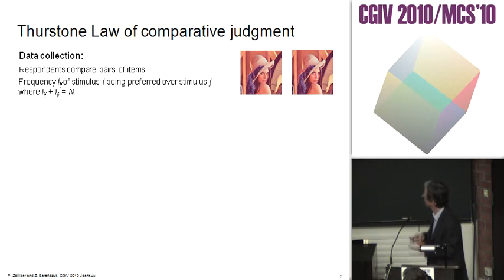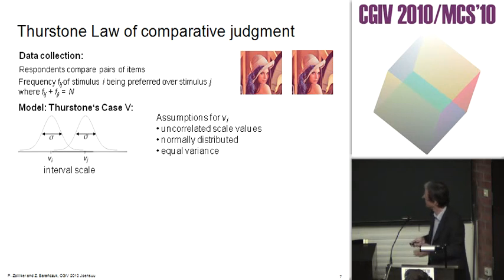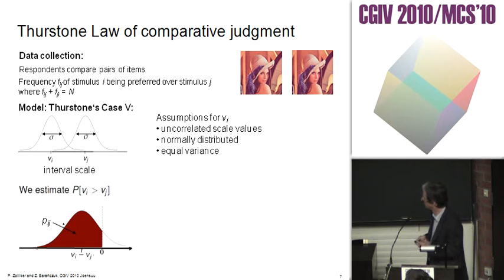The sum of F_ij and F_ji is usually N. Here we are very strict to Thurston case five. The assumptions are that we have uncorrelated scale values that are normally distributed with equal variance for each stimulus. Then we can estimate the probability that item i is preferred over j, which is just the area under the normal Gauss curve.